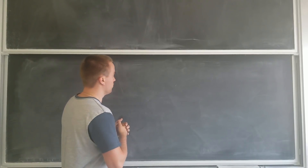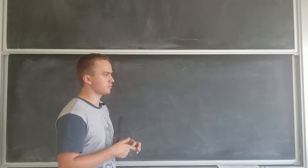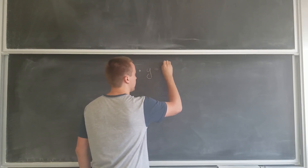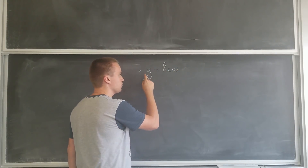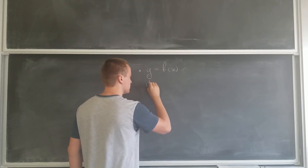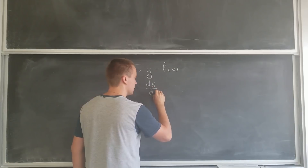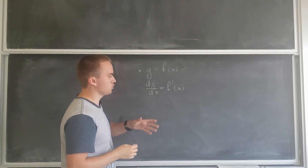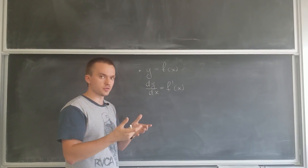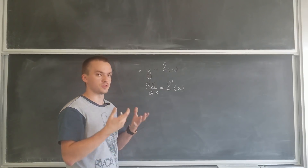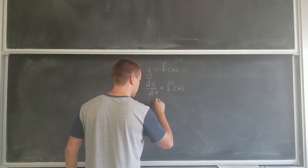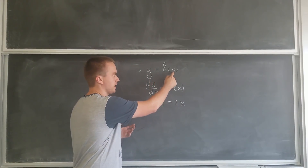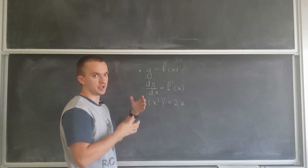Before we go on to discuss implicit differentiation, let's remind what a derivative is. If we're given y equals f of x, then if you want to find the derivative of this function, we're going to write this as dy over dx equals f prime of x. For example, to find the derivative of x squared, x squared prime is going to be just 2x. So when we're given a function in terms of variable x, we can find the derivative pretty easily.